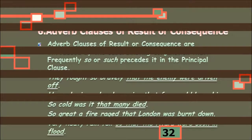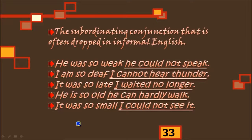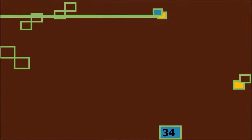There are also subordinating conjunctions that are often dropped in formal English. For example: 'He was so weak he could not speak'; 'I'm so deaf I cannot hear thunder' — here 'that' is dropped. Let's now move to adverb clauses of comparison.